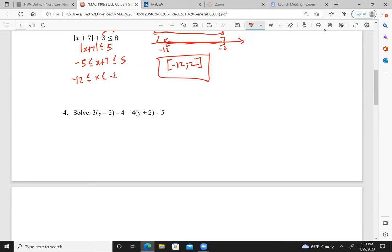Next up is simply solve the equation. So first we distribute, we have 3y minus 6 minus 4 equals 4y plus 8 minus 5. Combine our like terms. I have 3y minus 10. Here I have 4y plus 3. I'm going to subtract the 3 and get negative 13 over here and get y over here. y equals negative 13.